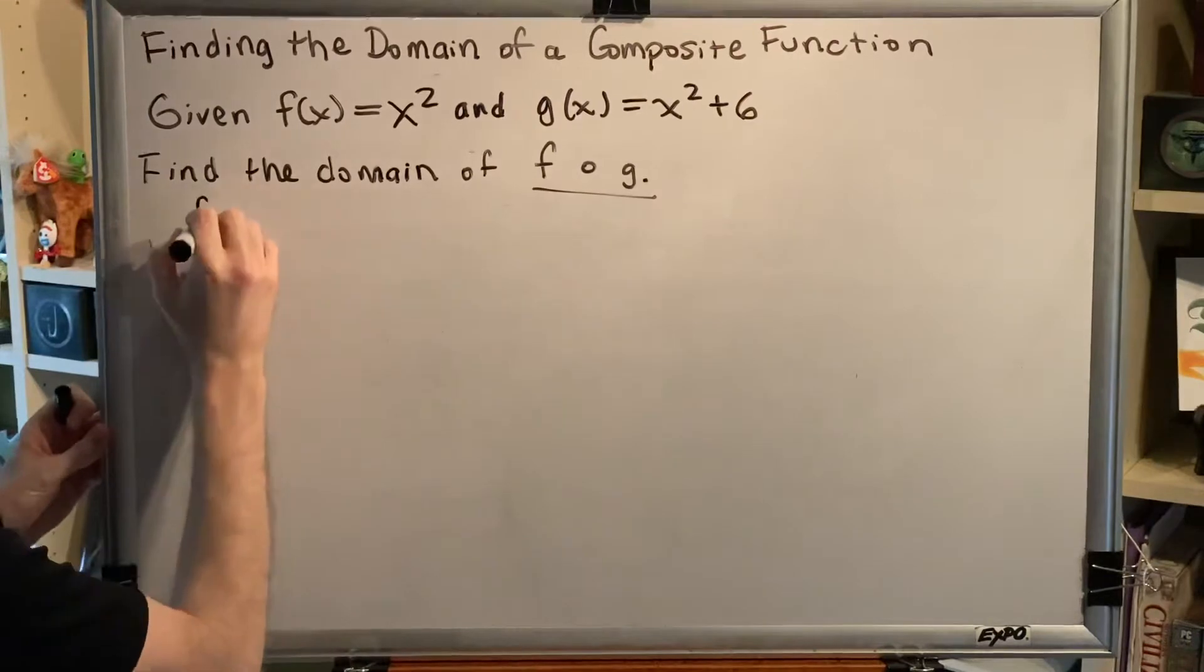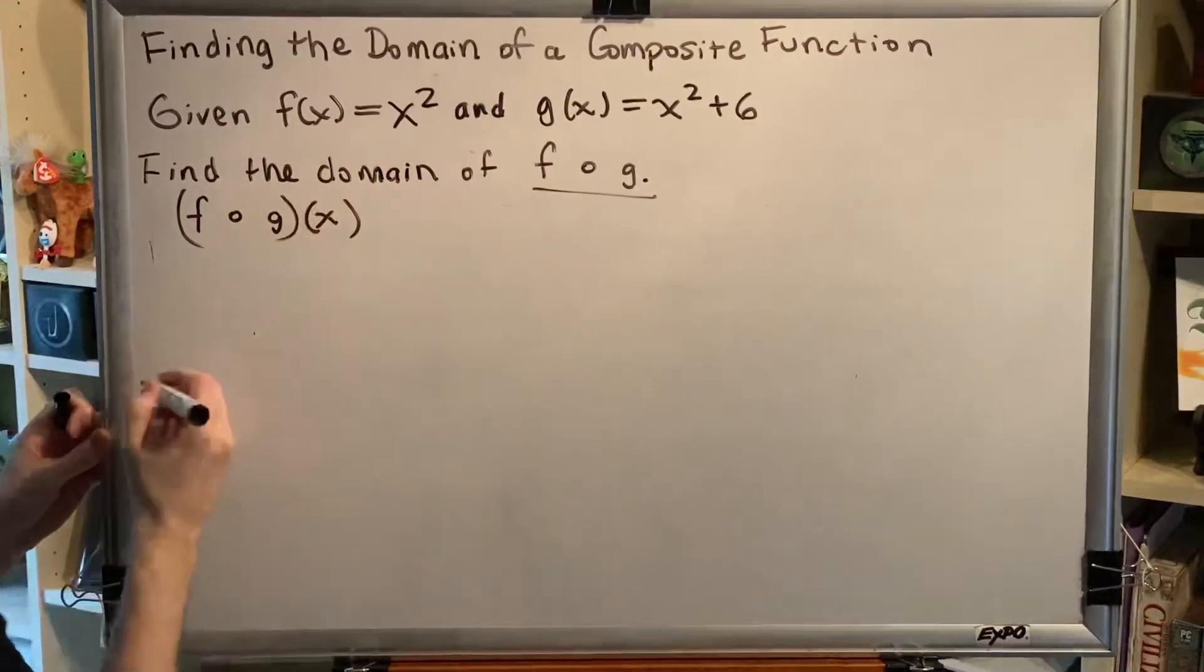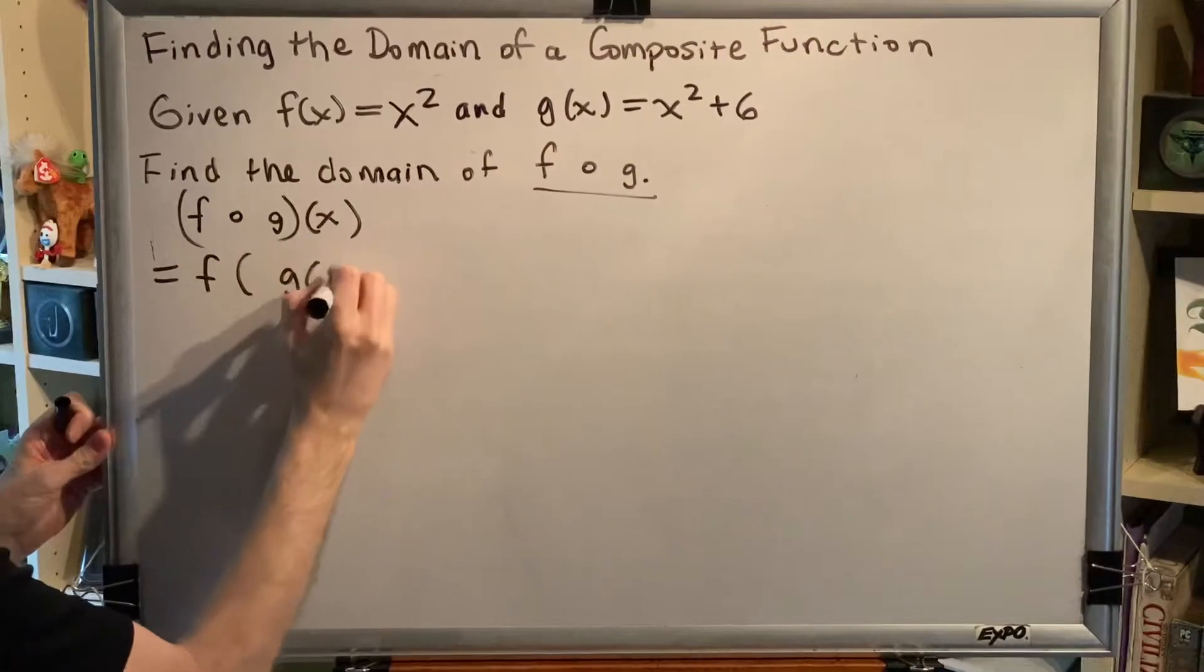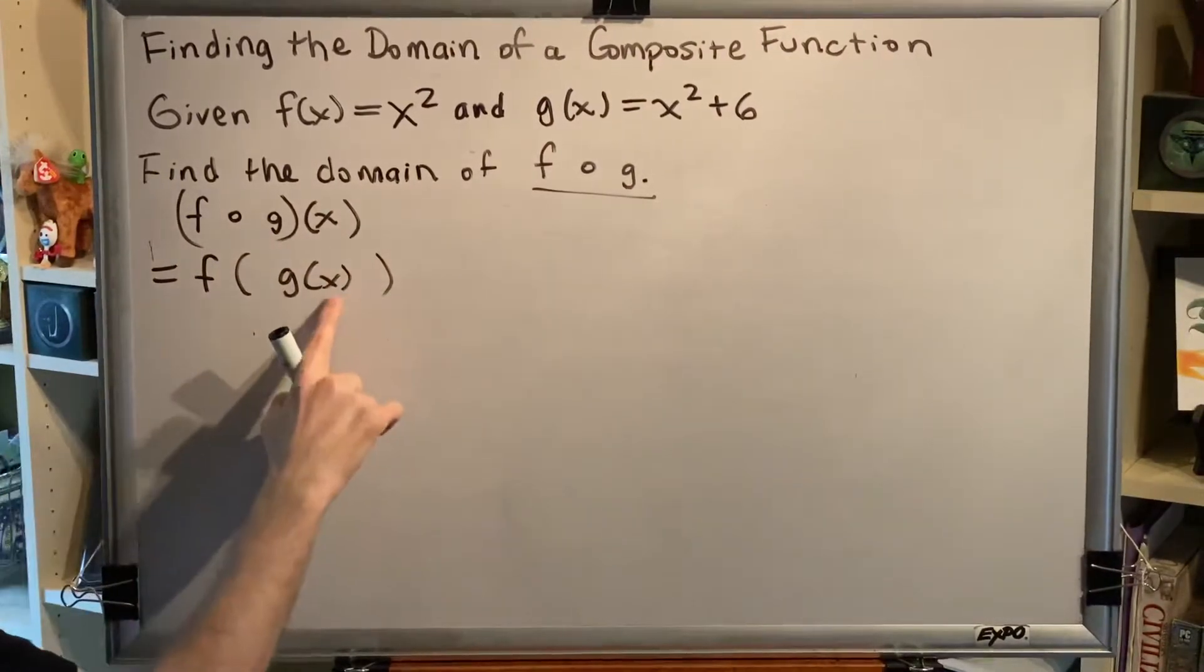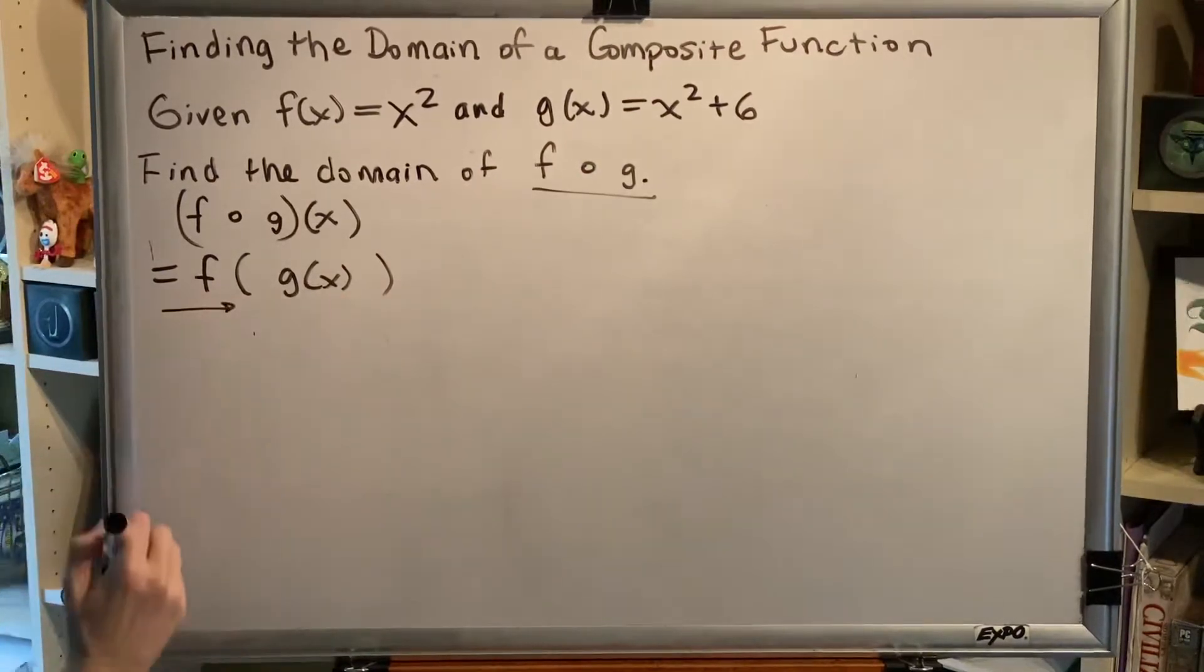f composed with g in this problem is the same as f composed with g of x. Rewriting using the definition, we get f of g of x. And because the item inside the innermost parentheses is a variable, we work from the outside in.